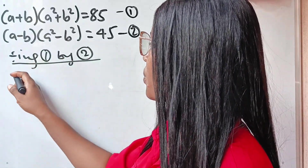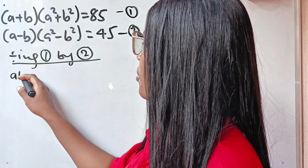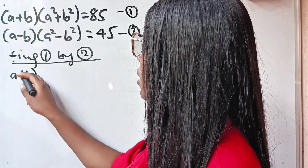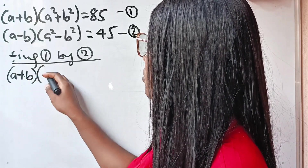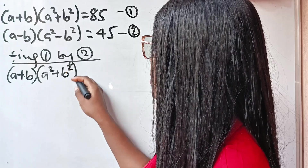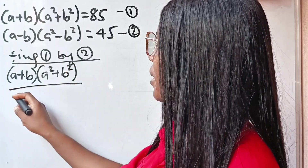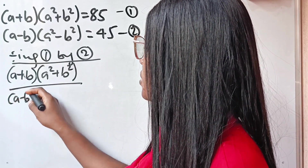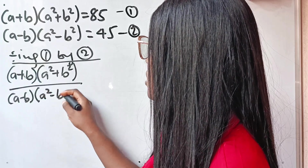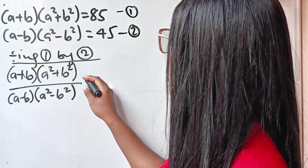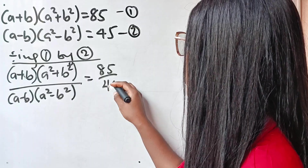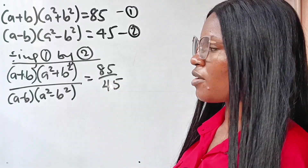If we do that, we have a plus b multiplied by a squared plus b squared, divided by a minus b multiplied by a squared minus b squared, is equal to 85 divided by 45.